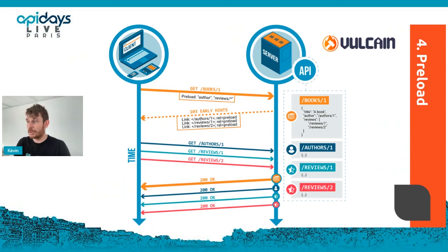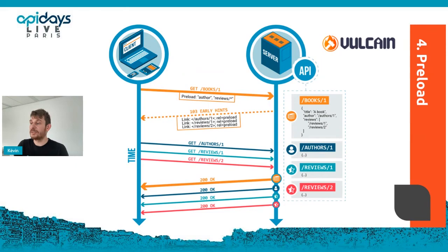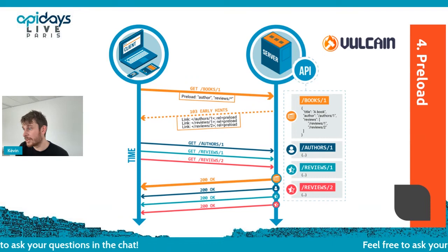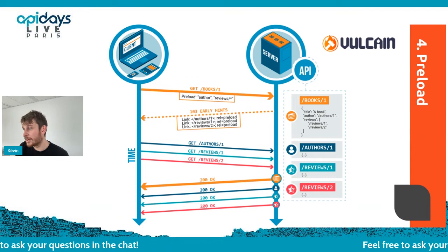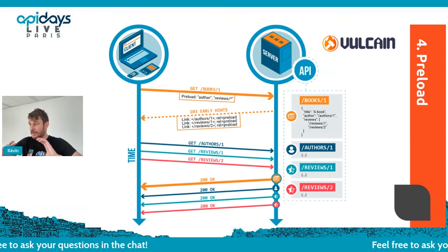To do this, I can use the Vulcan protocol that I'm proposing. The Vulcan protocol has a lot of features and I already made a dedicated talk at API Days, so watch that for all the details. Basically it uses new capabilities of the HTTP protocol — especially HTTP 2 server push or the 103 Early Hints status code — and allows the client to hint the server of the relations it will need. For instance, I fetch the book document and the client sends a special HTTP header called preload, saying it will need the author and reviews relations of this book.